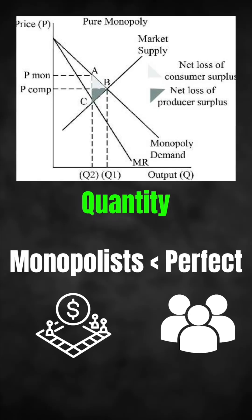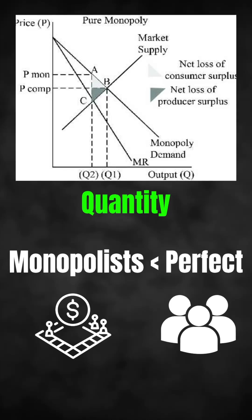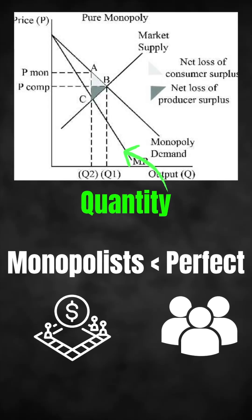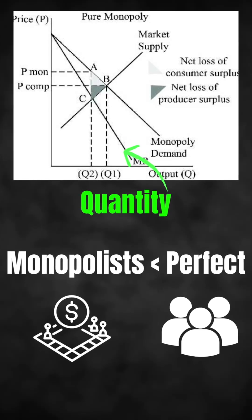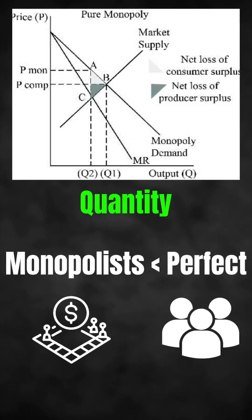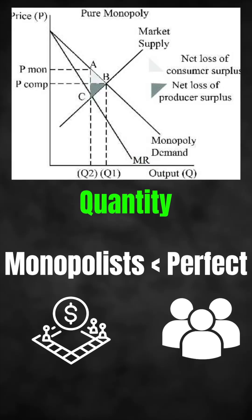Here you will see that the quantity of a monopolist is lower than that of perfect competition, and that makes a deadweight loss.